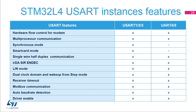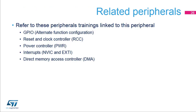The STM32L4 devices embed five instances. USART 1, 2, and 3 have a full set of features. Instances 4 and 5 do not support synchronous and smart card modes. Related peripherals include General Purpose Inputs and Outputs, Reset and Clock Controller, Power Controller, Interrupts Controller, and Direct Memory Access Controller. Please refer to these peripheral trainings for more information.